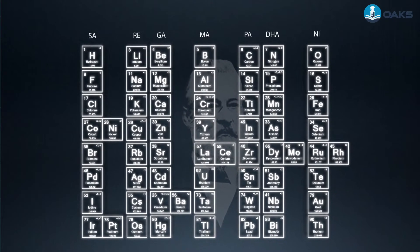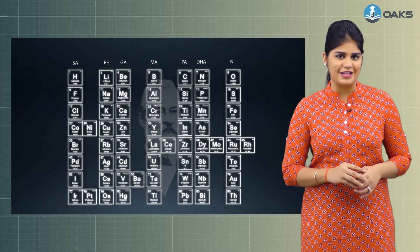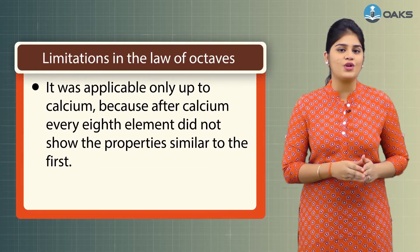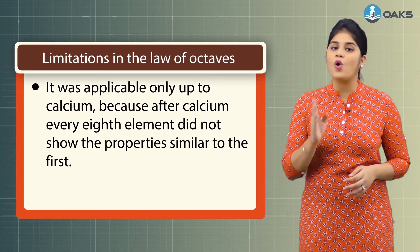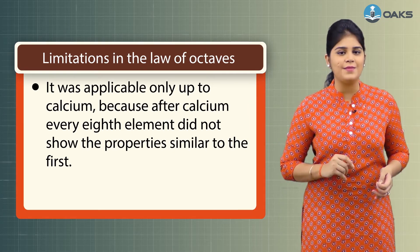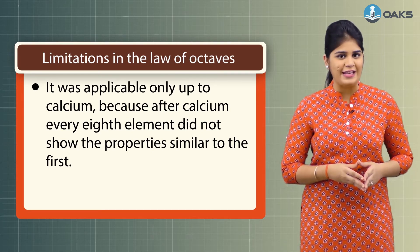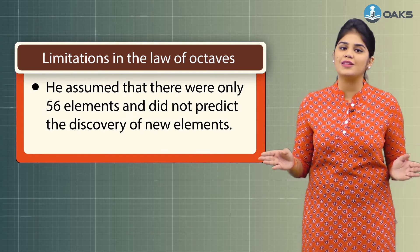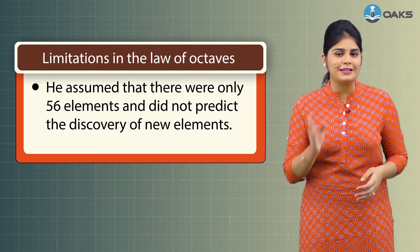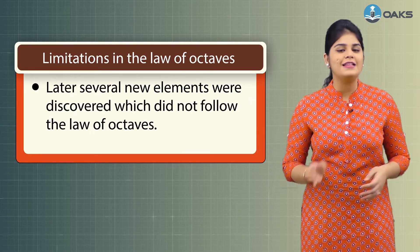However, the Law of Octaves also had some limitations. It was found that the law was applicable only up to calcium, because after calcium every eighth element did not show properties similar to the first. He also assumed that there were only 56 elements and did not predict the discovery of new elements.